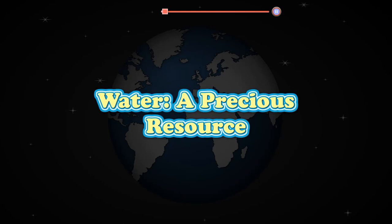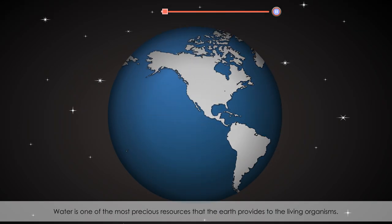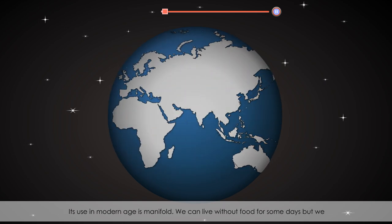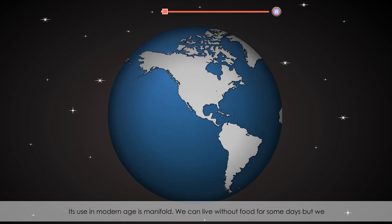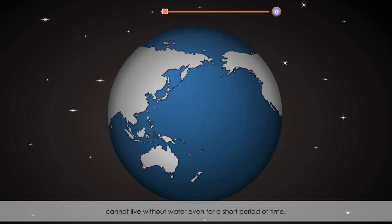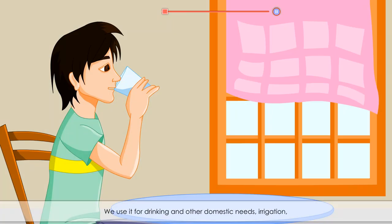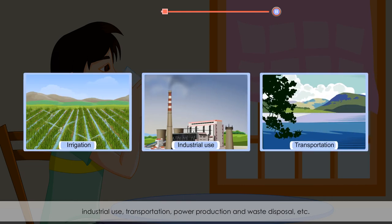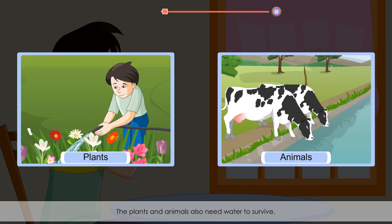Water — a precious resource. Water is one of the most precious resources that the earth provides to living organisms. Its use in modern ages is manifold. We can live without food for some days, but we cannot live without water even for a short period of time. We use it for drinking and other domestic needs, irrigation, industrial use, transportation, power production, and waste disposal. Plants and animals also need water to survive.